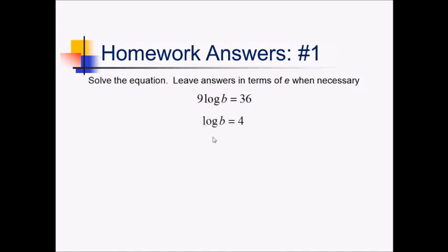Leaving us with just b. On the right side, I've got 10 to the 4th. Alternatively, you could just put this in exponential form. It's the same thing. So 10 to the 4th, then, is going to be 10,000.